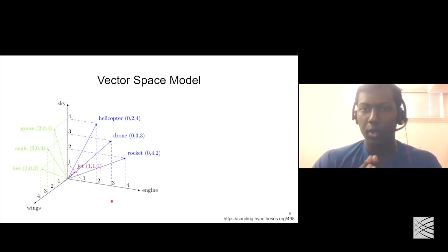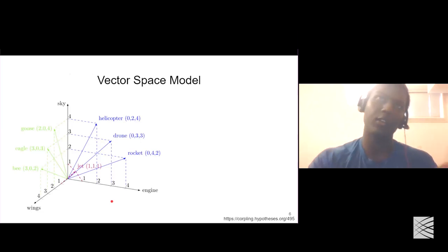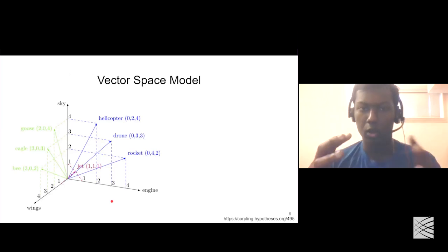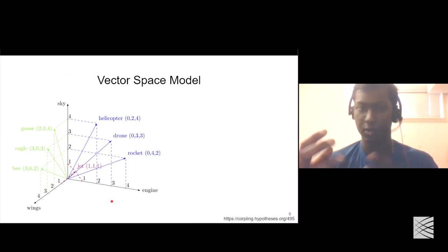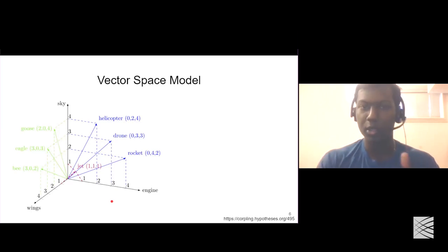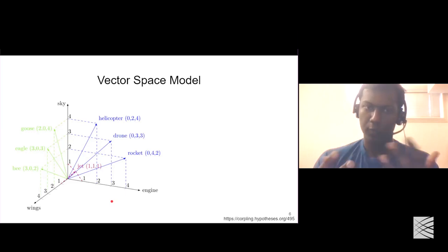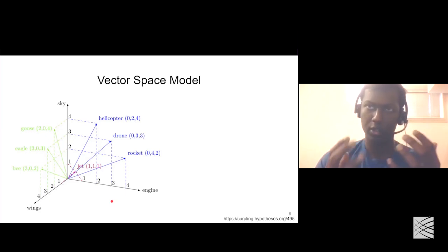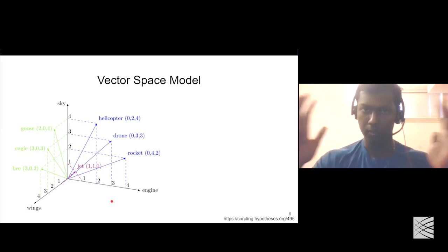I also want to talk about the vector space model, which is an idea that can be extended from the frequency count matrix. What we have here is a projection of all the words into a three-dimensional space in this case, but it can be projected into any n-dimensional space. Obviously, humans can only visualize 3D space, but this gives an overview of how we can use counts or frequency to visualize words in an n-dimensional space.